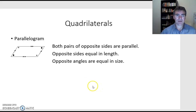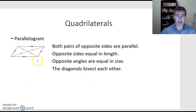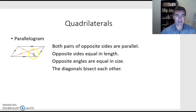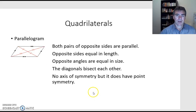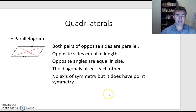Let's have a look at the diagonals of a parallelogram. There's one diagonal and there's the other. The diagonals in a parallelogram bisect each other — bisect means cuts into two equal pieces. So this diagonal cuts this one into two equal bits, and this diagonal cuts this one into two equal bits. But they're not all the same length — these two are the same and these two are the same.